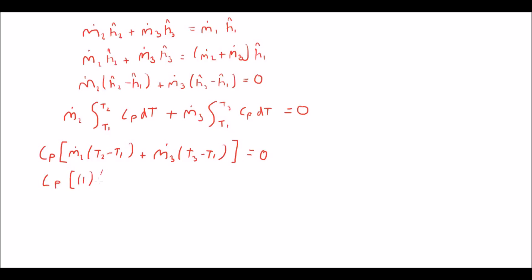So we're going to plug in the numbers. So m1 is 1, t2 is 243 minus 303 plus 3 times 323 minus 303 equals 0. And once you'll calculate this you'll get that it is negative 60 plus 60. From this point it's easy to tell that we get 0 equals 0 so the first law is satisfied.